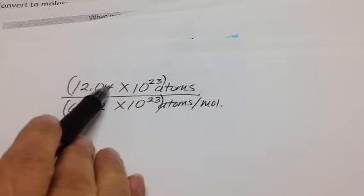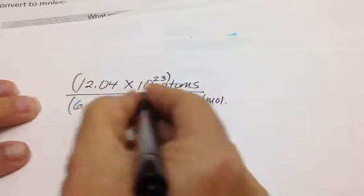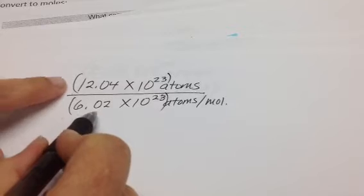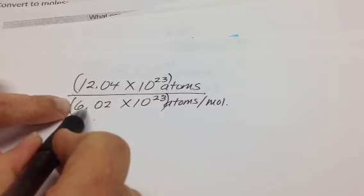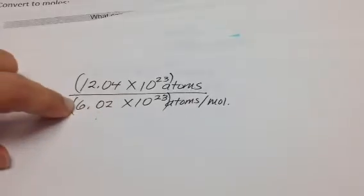I set my problem up to look like this. This is the number that I was given, and the function that it told me to do on my mole map was divide. So I set it up divided by, and this is the number off your mole map, it's Avogadro's number, 6.02 times 10 to the 23rd.